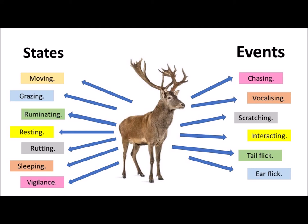His event behaviours — these short duration activities that we would count and record as a frequency — could be chasing of other individuals, the vocalisations that you've heard, scratching himself, interacting with other individuals in short sharp durations, or tail flicks or ear flicks that might give clues to his mood and underlying motivations. These short duration event behaviours, which we can't time, help us understand the context of the state behaviours. So we can time our state behaviours at the same time as counting our event behaviours, and comparison of these observations in a particular scenario tells us a lot about the underlying reason of the behaviour and which behaviours are most highly motivated at that particular time.